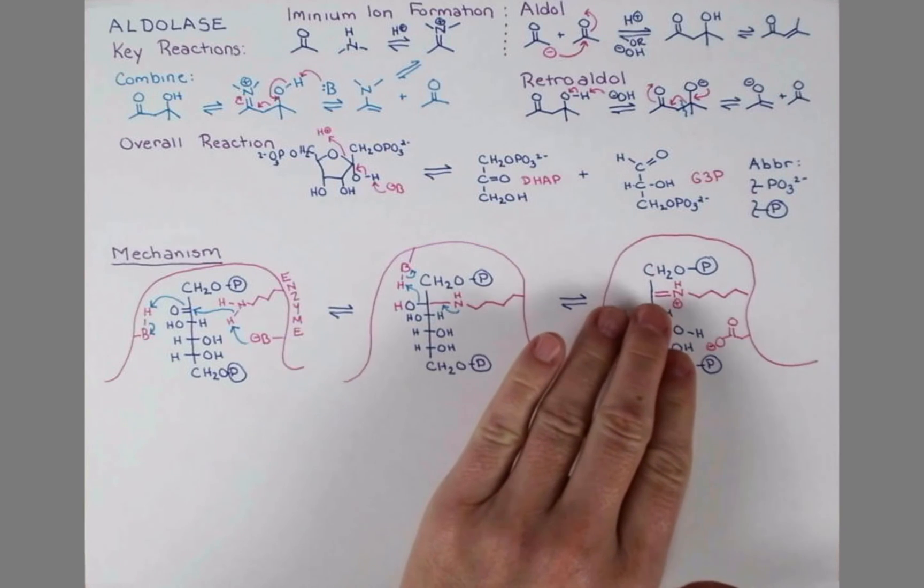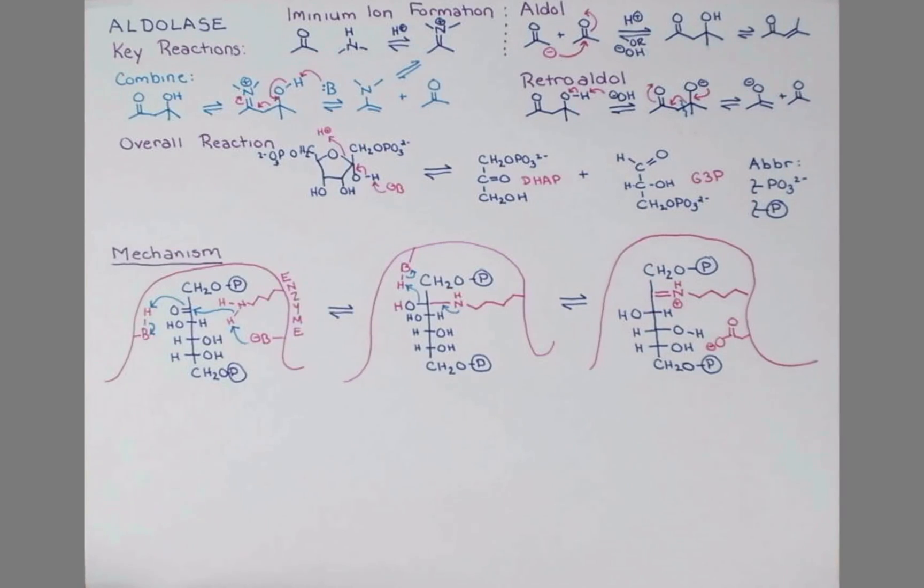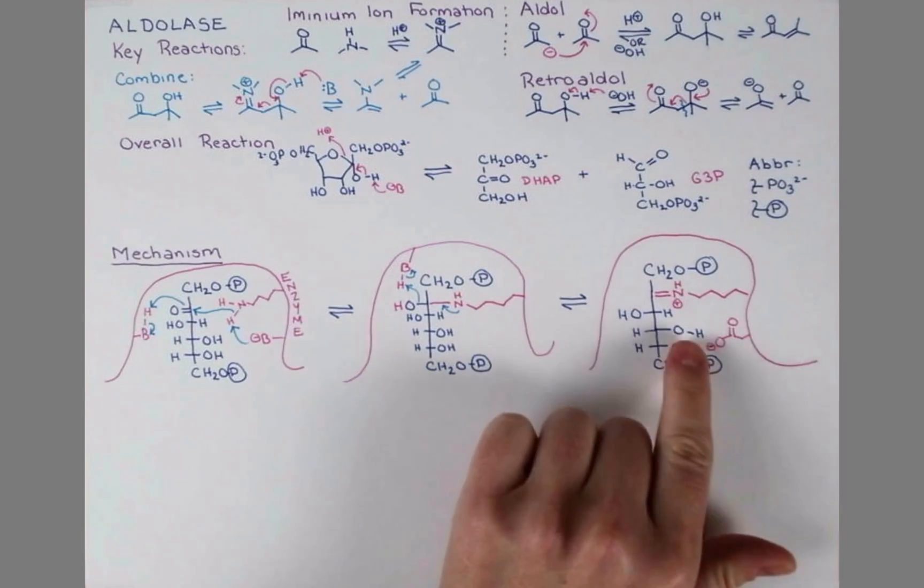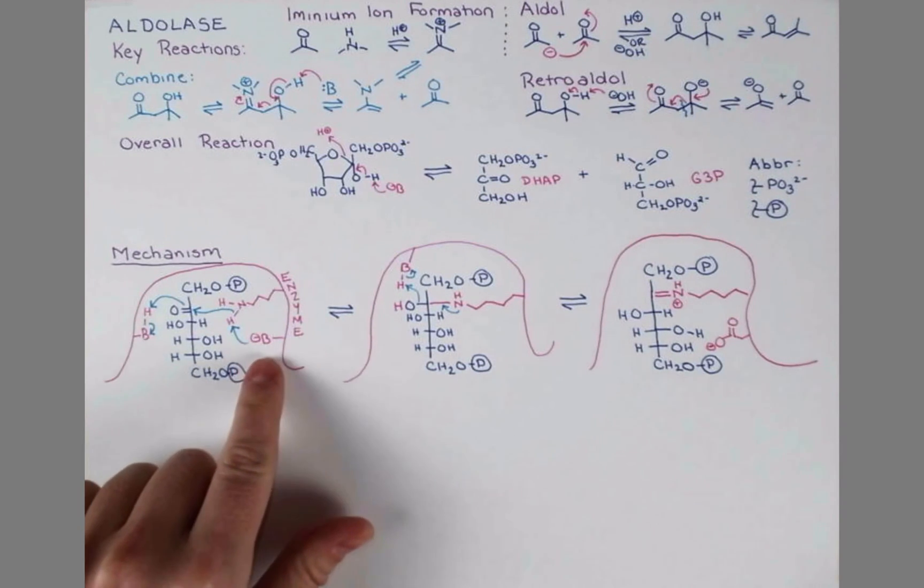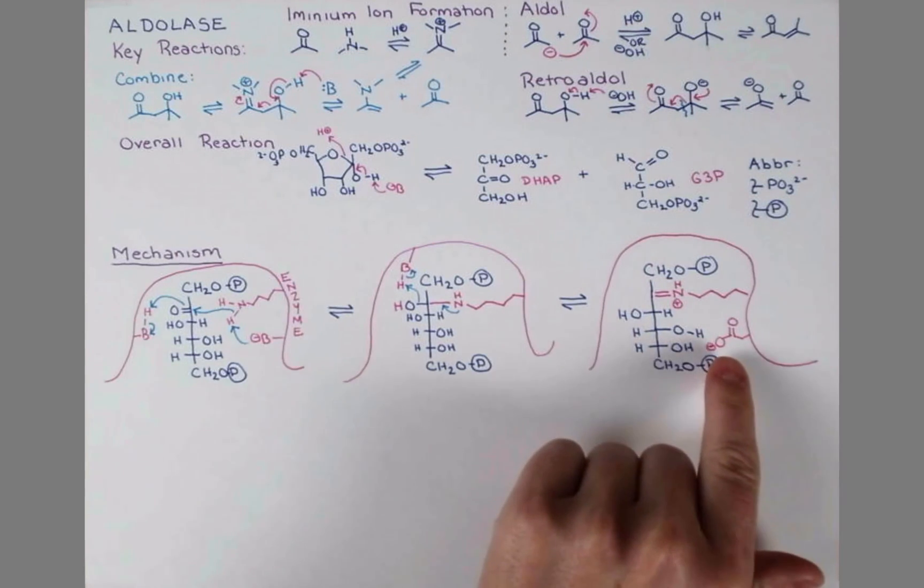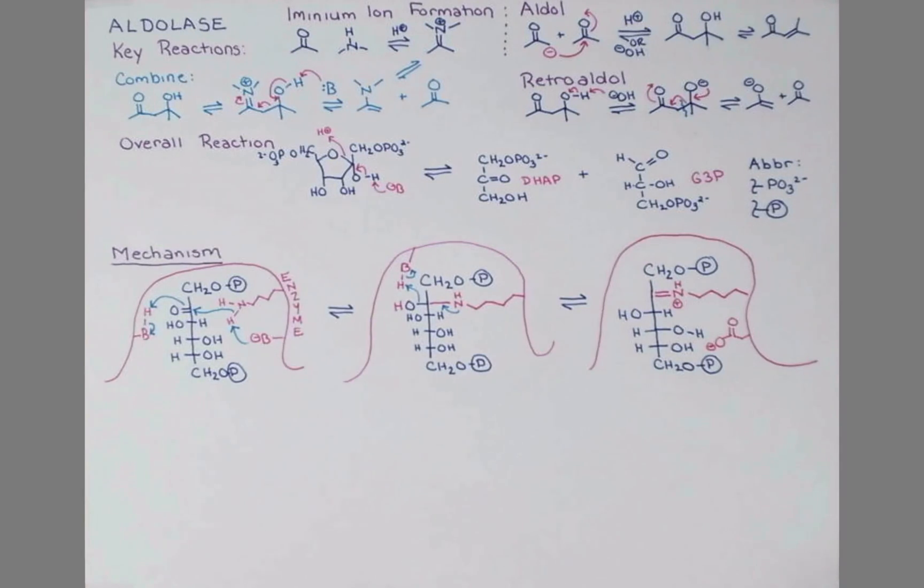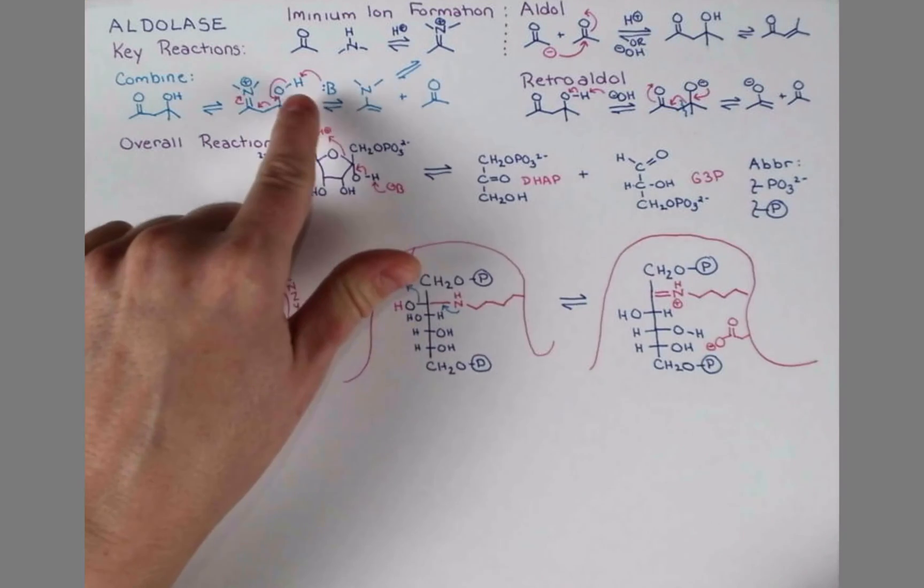Now with our iminium ion formed, like we had up here, we can show the retroaldol step. In aldolase, it's an aspartate residue that comes in and deprotonates here. So when I'm not sure of the residues, I use this shorthand for proton acceptors and proton donors. But in this case, we know the actual amino acid, so I'm drawing out its side chain. So in this reaction up here, aspartate is this base.